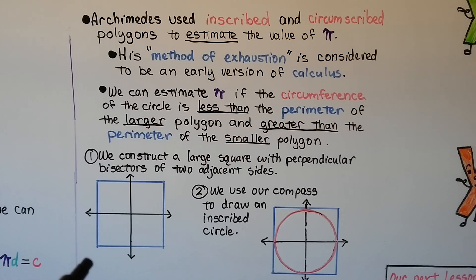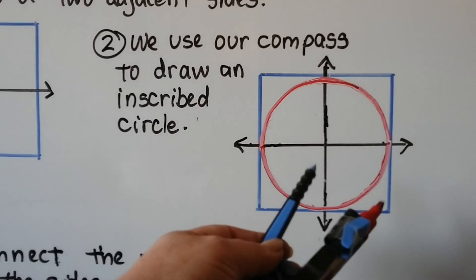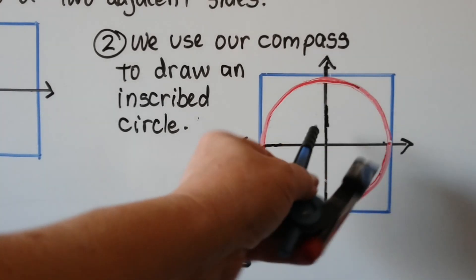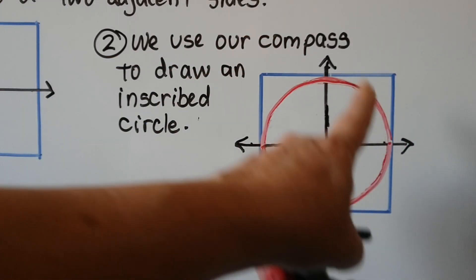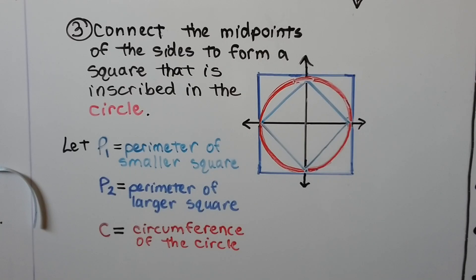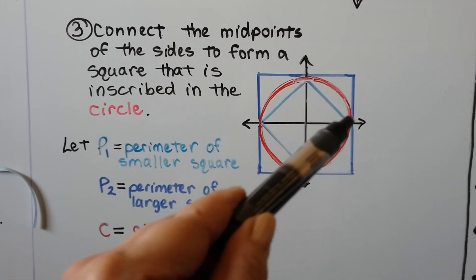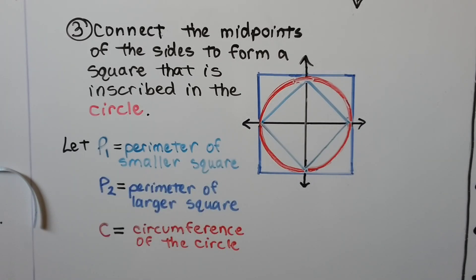First, we construct a large square with perpendicular bisectors of two adjacent sides. We use our compass to draw an inscribed circle — placing the compass at the very center and drawing a circle inside the square. Then we take a straight edge and connect the midpoints to form a square that is inscribed in the circle.